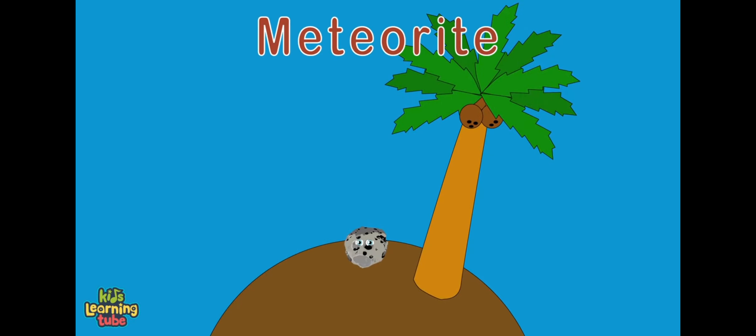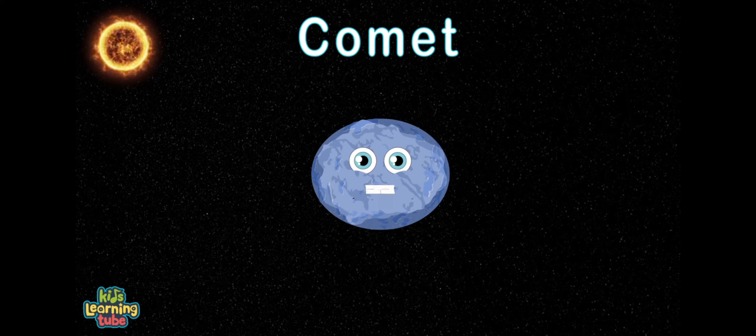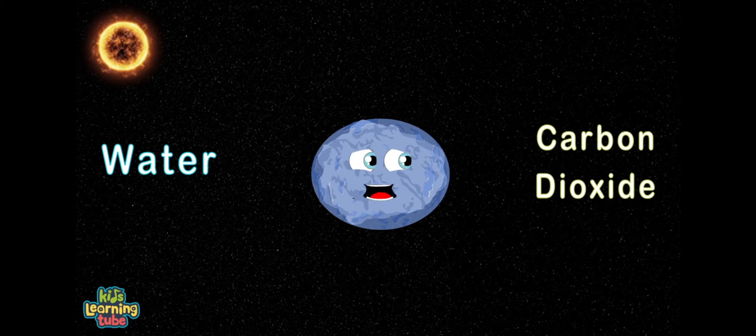I'm a comet, which is dust mixed with frozen gas. When fully frozen, I'm about the size of a small town. Through space I do pass. I'm made of ices like water, carbon dioxide, ammonia, and methane, mixed with cosmic dust from our solar system.